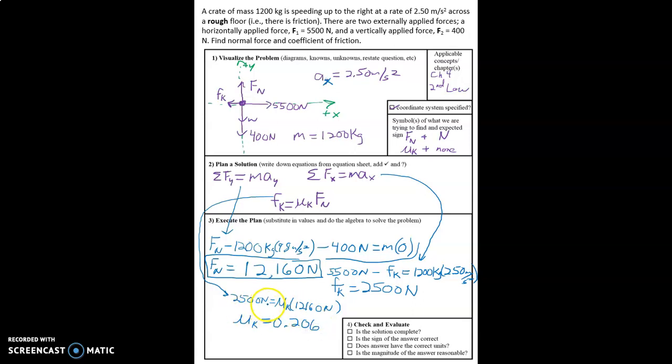And we're dividing newtons by newtons, and so we get no unit for our answer of coefficient of friction.